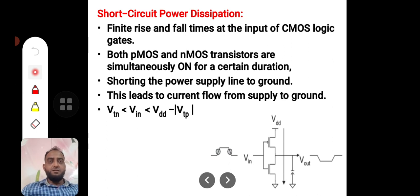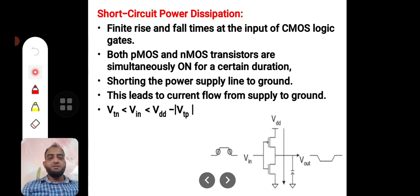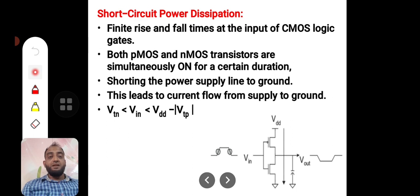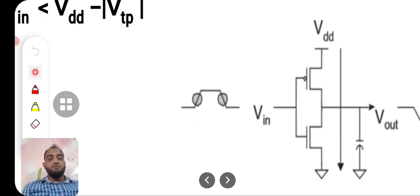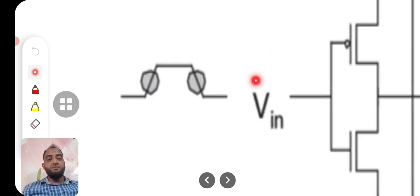Whenever the input is rising or falling, it will definitely take a very little time — instantaneously no input can jump from 0 to 5 volts, 7 volts, or 9 volts, and it cannot jump from high to low. It will definitely take some time, and during that finite time, as shown in the figure, things change.